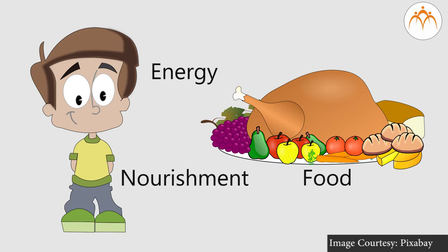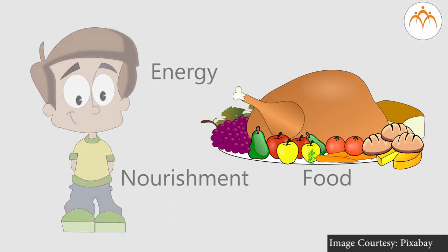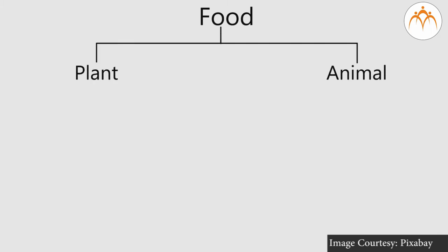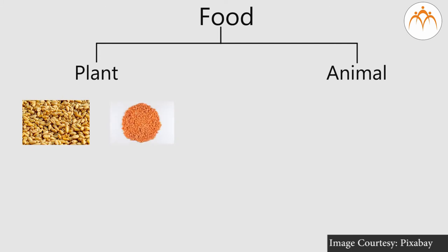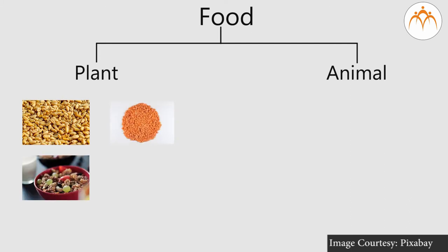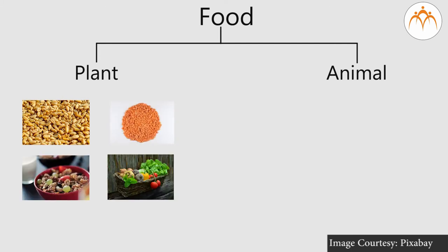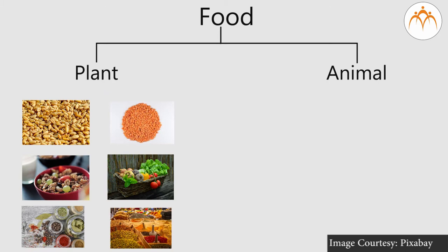Now tell me, what are the sources of food for us? We can obtain food from plant and animal sources. For example, grains, pulses, cereals, fruits, vegetables, herbs, spices — they are all obtained from plants.